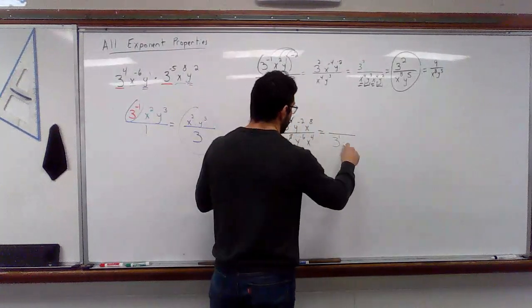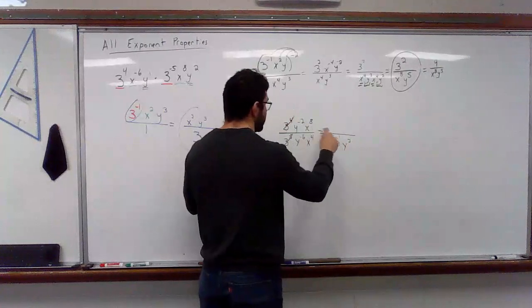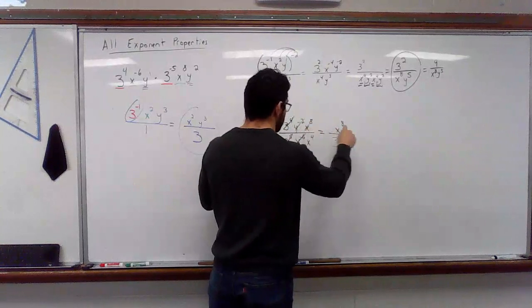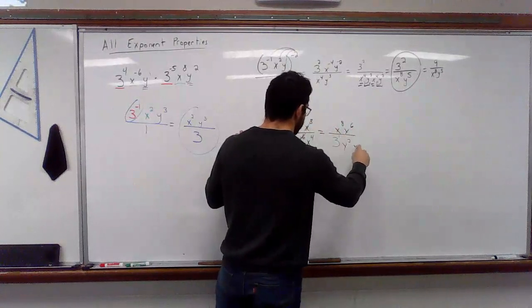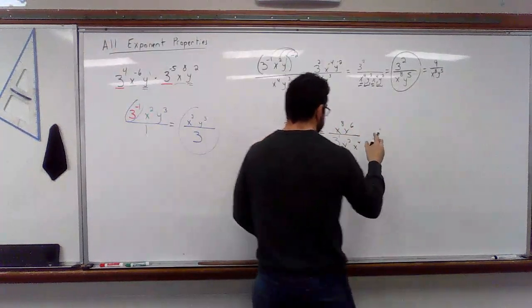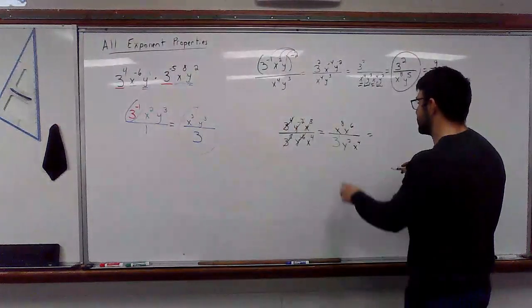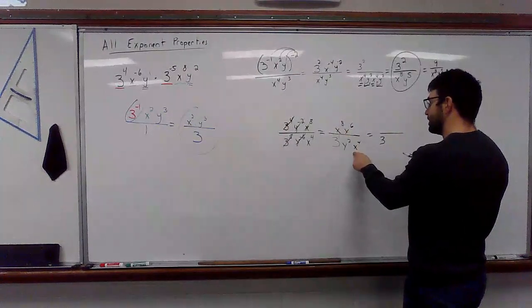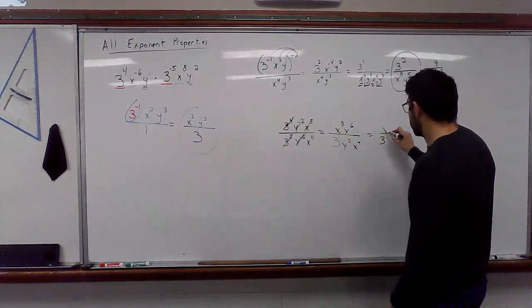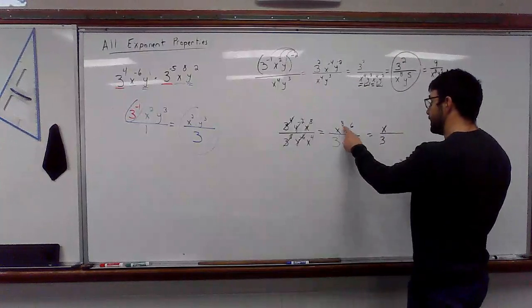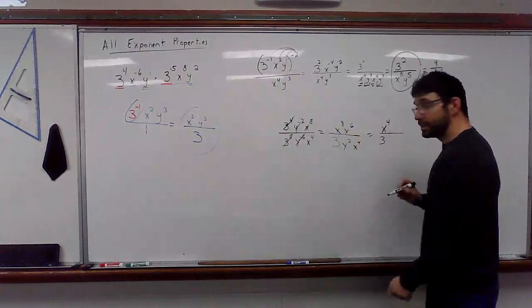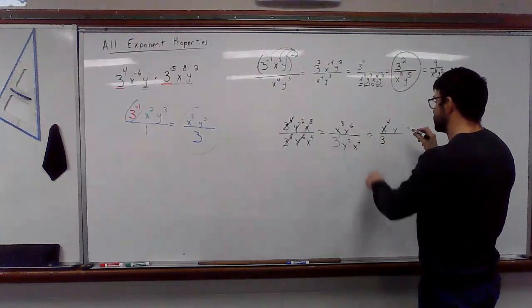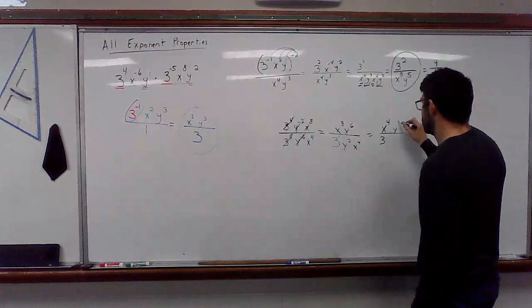So, I've got a y. So, y to the negative two. So, this is done. This is done. Y to the negative two. I don't want it. It goes to the denominator. X to the eighth stays. It's positive. Y to the negative sixth goes to the top. X to the fourth stays. Okay. So, now we're looking at the same basis. So, three is the only thing that's so far staying. X, X. The larger exponents in the numerator. So, the X stays in the numerator. Eight minus four is four. Y, the larger ones in the numerator. Six minus two is four.